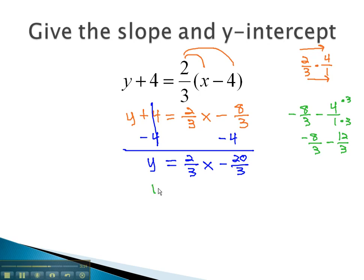The slope-intercept equation, y equals mx plus b, now makes it easy to identify these key pieces of information. m, the slope, is the 2 thirds multiplied by the x. b, the y-intercept, is found added or subtracted from the end. The y-intercept here is negative 20 over 3.